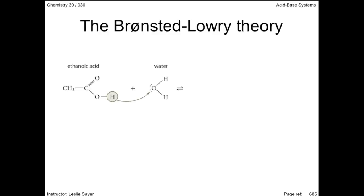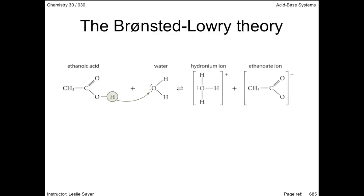This partial ionization is indicated by the equilibrium double arrow. The products are hydronium ion and an ethanoate ion.